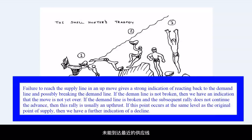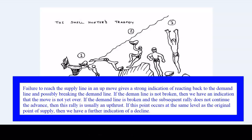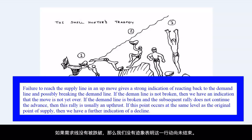Failure to reach the supply line in an up move gives a strong indication of reacting back to the demand line and possibly breaking the demand line. If the demand line is not broken, then we have an indication that the move is not yet over.